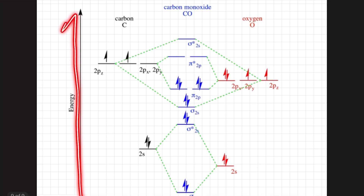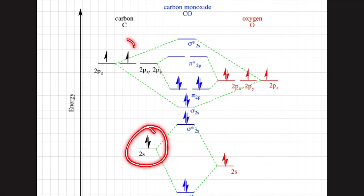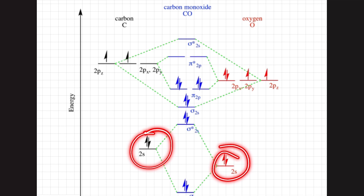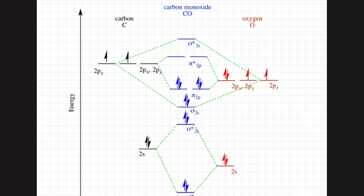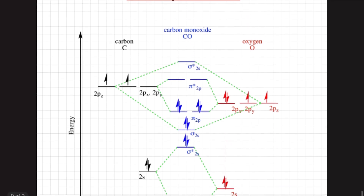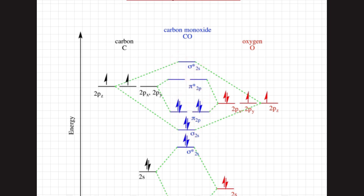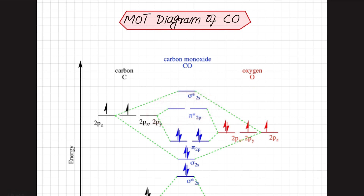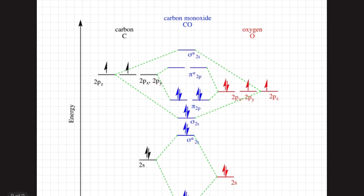Moving from low to high energy in the MOT diagram: carbon has 2s² and 2p² electrons, and oxygen has valence electrons 2s² and 2p⁴. The s orbitals of carbon and oxygen overlap to form two orbitals: σ2s and σ*2s, and both electrons are placed there. Similarly, the p orbitals of carbon and oxygen combine to form σ2p, σ*2p, and σ*2s. The pi star (π*) orbitals are empty and can facilitate intake of charge density from the metal. These are the pi star orbitals represented in the MOT or molecular orbital diagram.